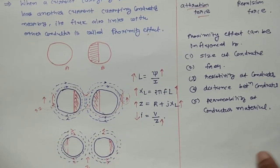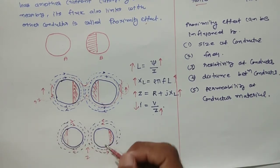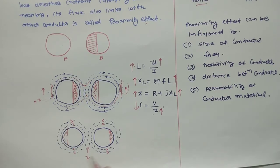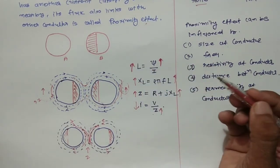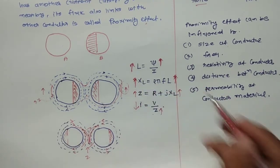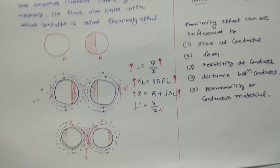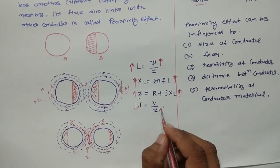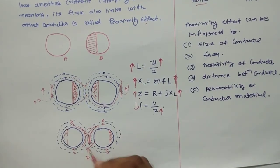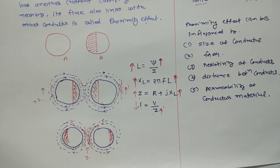That is the proximity effect, and due to this, the resistance is also affected. When current flows through the two conductors in opposite directions, the magnetic fields are clockwise in one and anticlockwise in the other. The flux density is more at the outer facing portions, so inductance is more there, inductive reactance is more, impedance is more, and current is higher in the outer portion where impedance is less. That is the proximity effect, which directly affects the resistance of the transmission line.